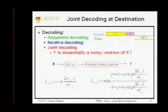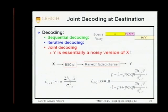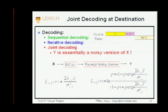For decoding, the source has two parts and the relay has one part. We can do sequential decoding — combining source and relay parts as a Slepian-Wolf code, then combining with x via maximum ratio combining. We can also do iterative decoding with soft feedback, or joint decoding, which is optimal. Because the syndrome is essentially a parity of x, and y is a distorted version of x, the equivalent channel from the destination's view is a cascade of a BSC (due to relay decoding errors) and a Rayleigh fading channel (the relay-destination link). This combined channel gives the log-likelihood ratio for decoding.